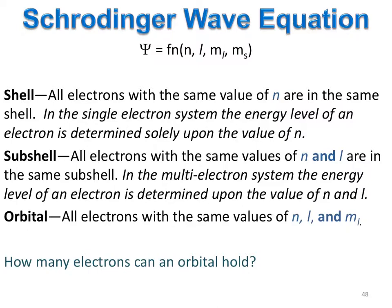All electrons with the same values of n, the principal quantum number, and l, the angular momentum quantum number, will be in the same subshell and have the same energy. All the orbitals in the subshell will have the same energy and the same values of n and l, but their values of m sub l will be different.